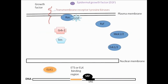Now I am going to explain the ERK pathway through an animation. You can see the different components of the ERK pathway: epidermal growth factor, RAS, GRB2, SOS, RAS, MEK, ERK, and ELK1. All of these have been explained previously in the presentation.